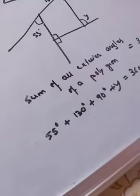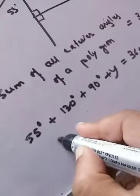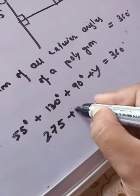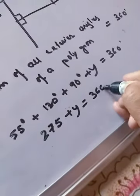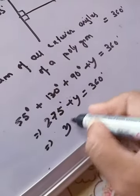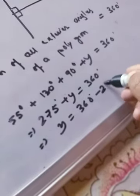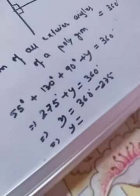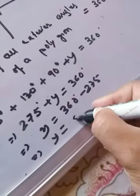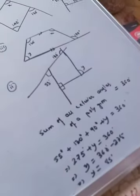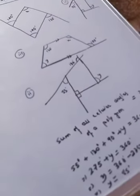Adding up: 275° + y = 360°. Transposing 275° to the right-hand side, the value of y = 85°. That is the solution to question number two. Let's move on to question number three.